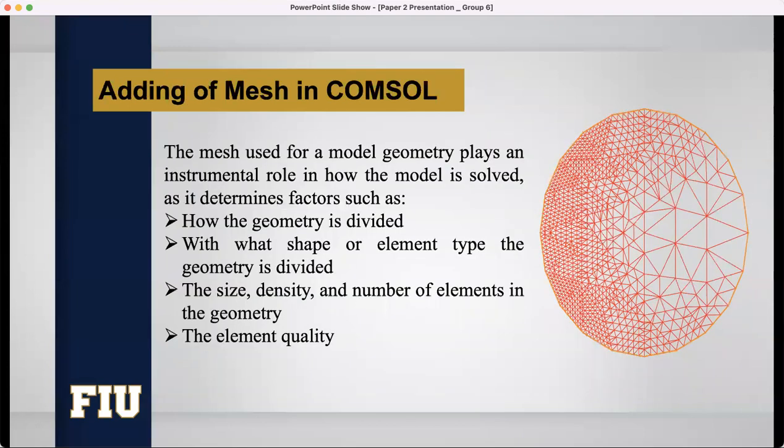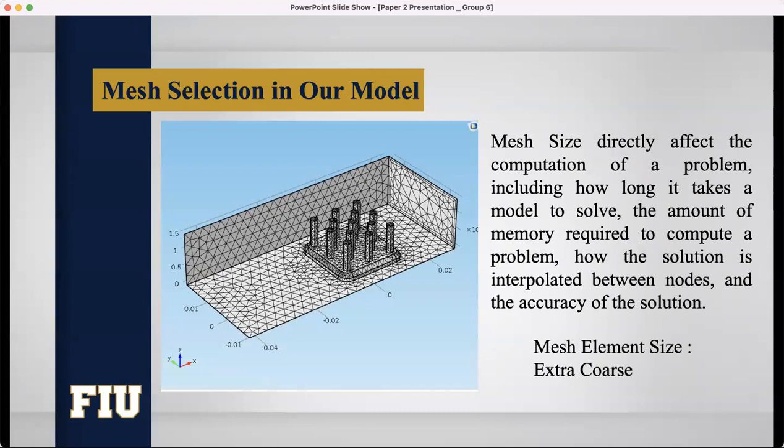After selecting the material, we need to add mesh. We need to know why we will use mesh in COMSOL or in our model. The mesh used for a model geometry plays an instrumental role in how the model is solved. And it determines factors such as how the geometry is divided, with what shape or element type of geometry is divided, the size, density, and number of elements in the geometry, and the element quality. Mesh size directly affects the computation of a problem, including how long it takes a model to solve, the amount of memory required to compute a problem, how the solution is interpolated between nodes, and the accuracy of the solution. The more small will be the mesh size, the more time it will take to solve the problem, to solve the model, and the result will be more precise. In our case, we have used extra coarse as the mesh element size.